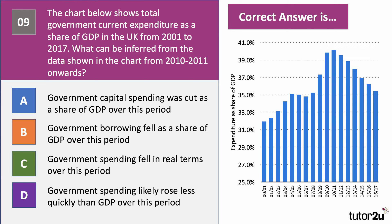Question nine: the chart in the bottom right corner shows total government current spending as a share of GDP in the UK from 2001 to 2017. What can be inferred from the data shown in the chart from 2010–2011 onwards — the last six years of the data? Press the pause button, look at the chart carefully, and come back when you want the answer.